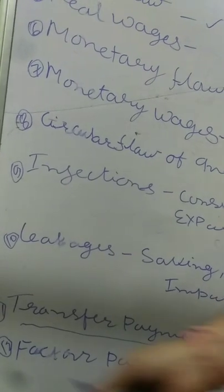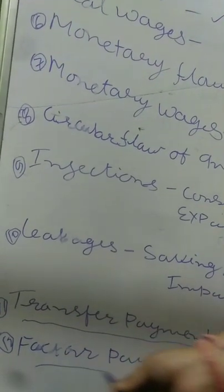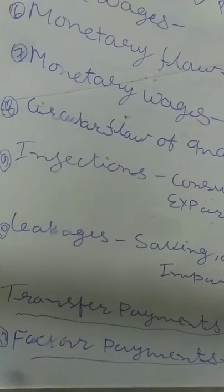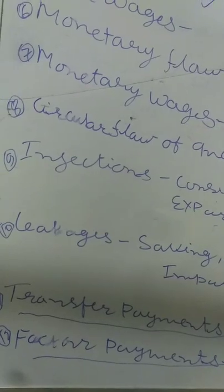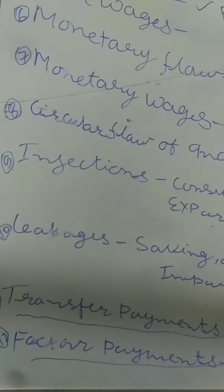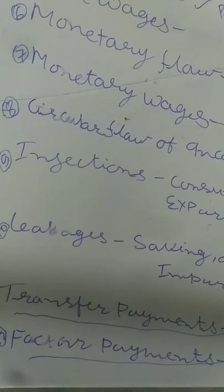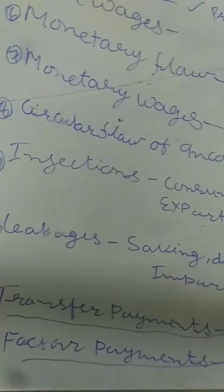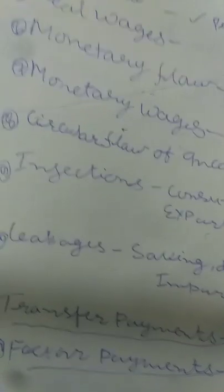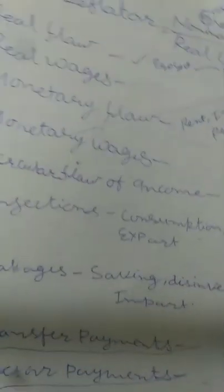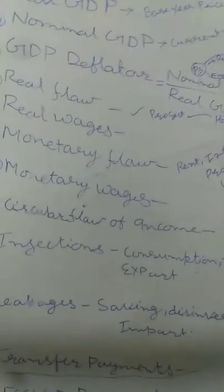Factor payments refers to the payment which a factor of production receives under the production process on the basis of their marginal productivity. That's all.